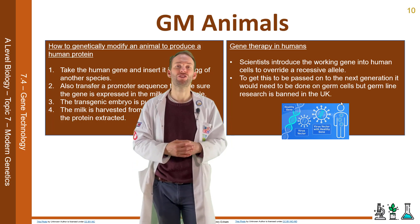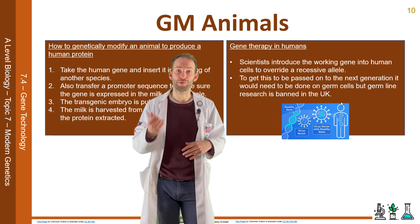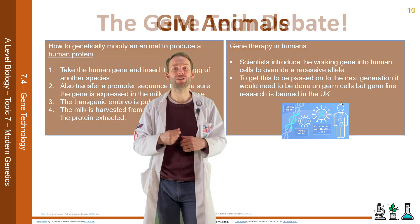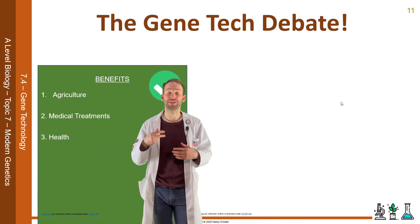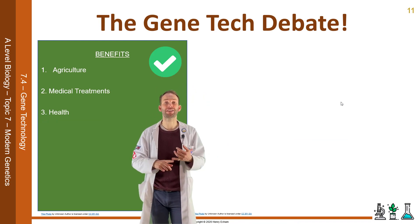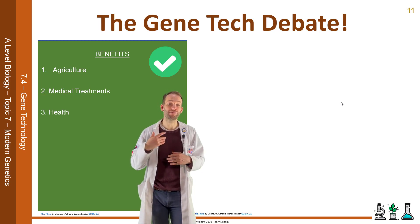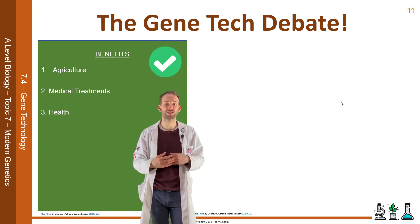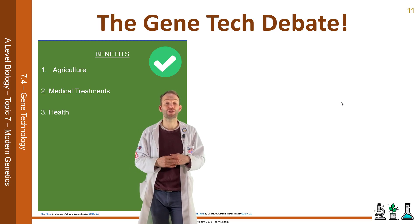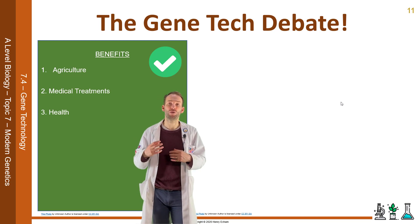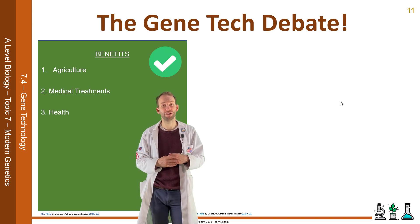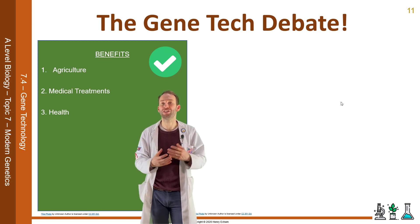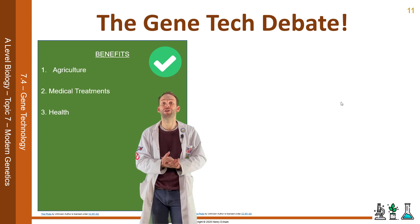There are lots of benefits to genetic modification. In agriculture: GM crops getting a higher yield, growing crops in a greater range of climates, using less pesticides and fertilizers, and feeding the growing population. In terms of medical treatments, you can manufacture drugs using microbes instead of animals. You can also use animals as models of disease to try out new treatments rather than on humans. GM crops can improve nutrition, and there may be a solution there to feeding an ever-growing population.